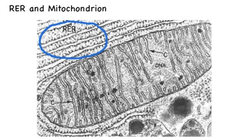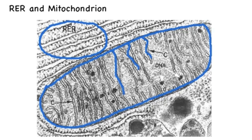In this image we can once again identify the region of the rough endoplasmic reticulum by its association with ribosomes. But the larger organelle present here is the mitochondrion. We can see the lines that we previously represented on our diagram — the internal compartments formed by the inner membrane of the mitochondrion.